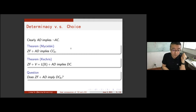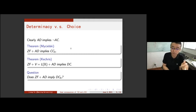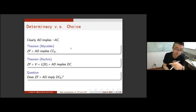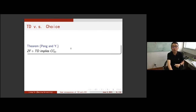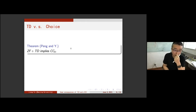There is a long-standing question in set theory: whether ZF plus AD implies DC_R. We still don't know whether it's true or not. They are consistent, but if you find the conjunction then essentially it collapses. Recently, Peng and I proved that ZF plus TD also implies CC_R.